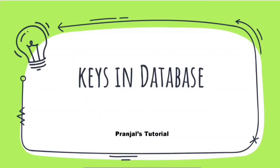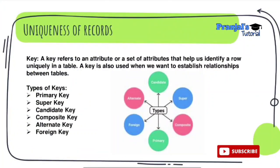What are Keys in Database? A Key refers to an attribute or a set of attributes that helps us uniquely identify a row or a record in a table. Basically, a Key is an attribute or set of attributes that help us uniquely identify a record. Keys are also used when we want to establish relationships between tables.